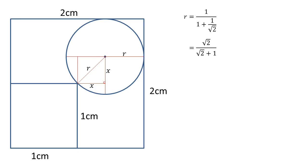We get √2/(√2 + 1), but we need to rationalize the denominator. Let's multiply by (√2 - 1)/(√2 - 1).